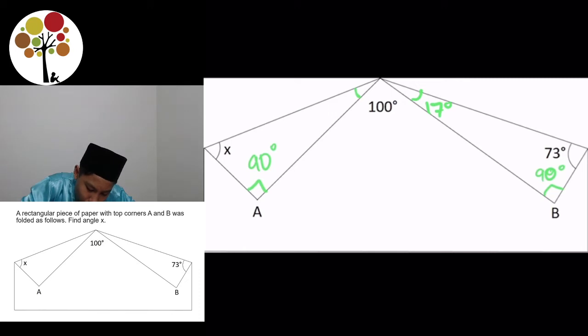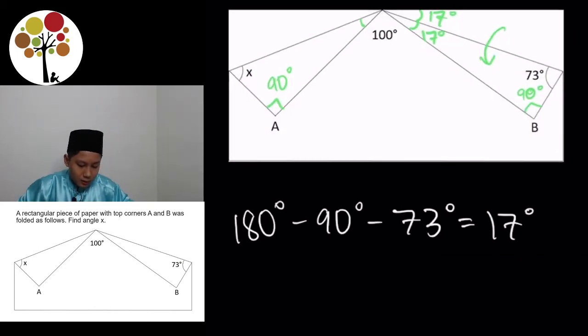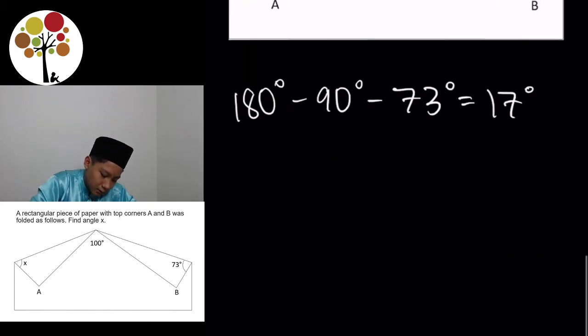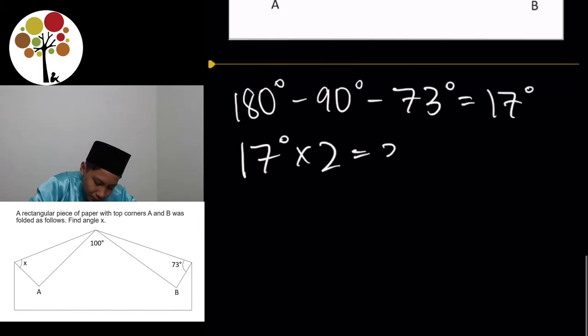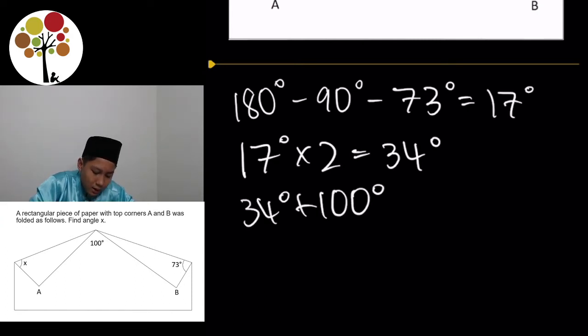And I'll just draw the arrow to show you how it's folded. And since it's folded, you also know that this here is also 17 degrees. So, we'll take 17 degrees times 2, which is equal to 34 degrees. And then we take 34 degrees plus 100 degrees, which is equal to 134 degrees.